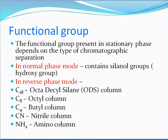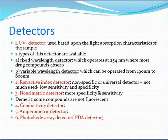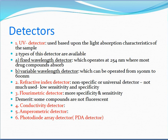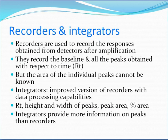Detectors used in HPLC include: the UV detector, based on light absorption characteristics of the sample. Two types are available — the fixed wavelength detector, which operates at 254 nm where most drug compounds absorb, and the variable wavelength detector, which can be operated from 190 to 600 nm. Other detectors include the refractive index detector, which is non-specific and universal but has low sensitivity; the fluorometric detector, which offers high specificity and sensitivity, though some compounds are not fluorescent; and conductive, amperometric, and photodiode array detectors.